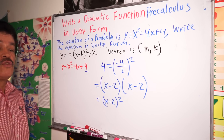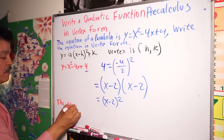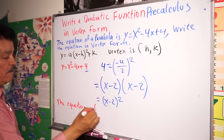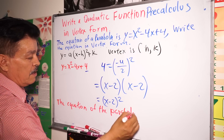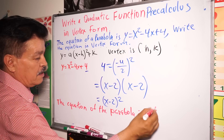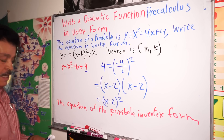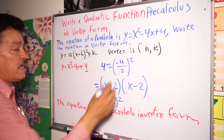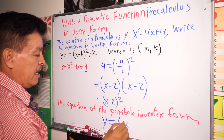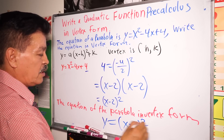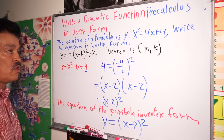Then the equation of the parabola in vertex form — the equation of the parabola in vertex form — is y equals (x minus 2) to the second power. That's the answer for this quadratic function. This function is a perfect square.